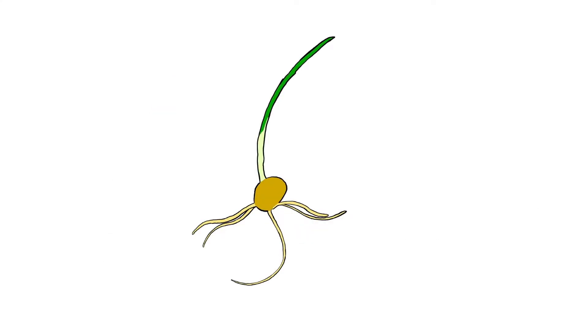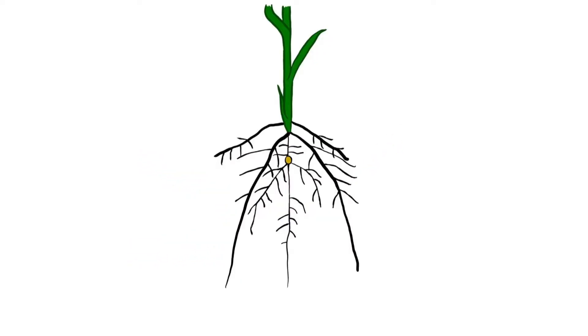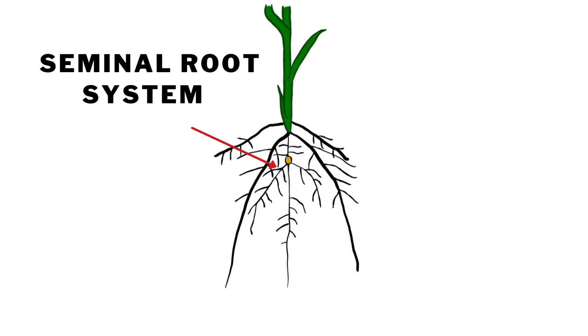Once the seed germinates, the primary roots burst from the seed. Soon after, four or five lateral seminal roots emerge. These form the seminal root system, which may grow more than three feet in depth and support the plant until the nodal roots appear.